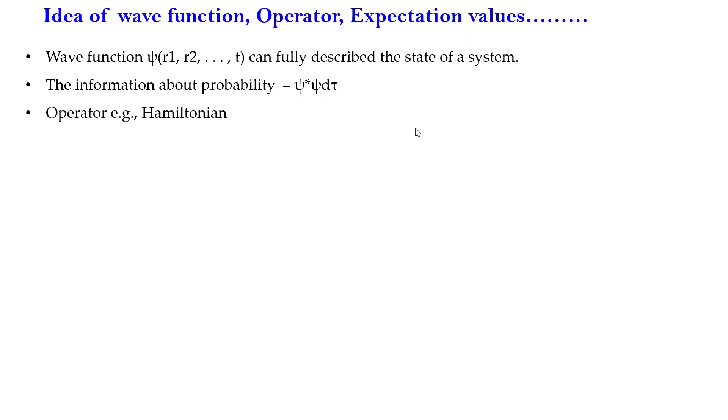Also, we know the operator, like the Hamiltonian, which is the energy operator. If you know the wave function, you can operate by an operator and then you will get the required properties. If you operate your wave function by Hamiltonian, you will get the energy of the system. Next is the expectation values. There is an expression where we can make an integration of psi star, and if it is normalized, the denominator will be one, and this is actually called the average value of the system.